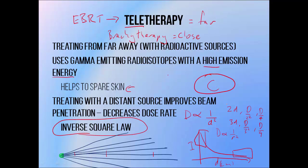As a beam passes through your patient, the number of photons passing through a given point decreases due to attenuation and due to spreading out by the inverse square law. So if the source is close to the patient, the inverse square law is going to make the dose fall off very quickly. If the source is further away, the inverse square law is going to make it fall off much more slowly. This is why having a beam source further away from the patient enables it to deliver more dose at greater depths.